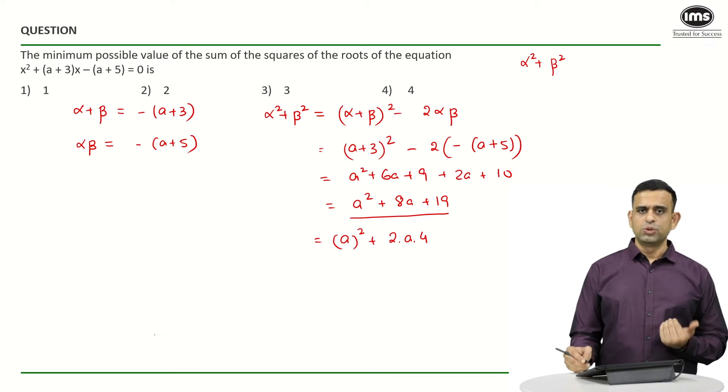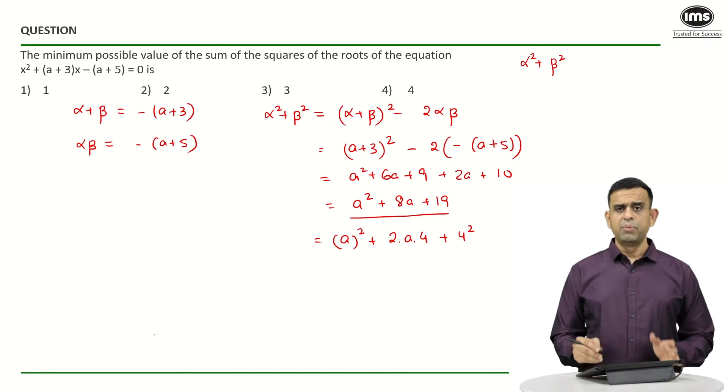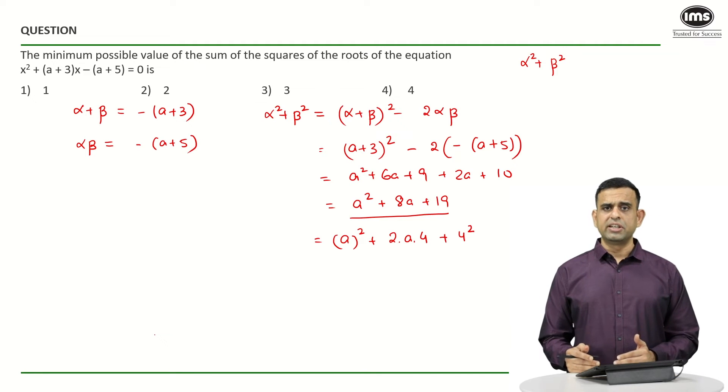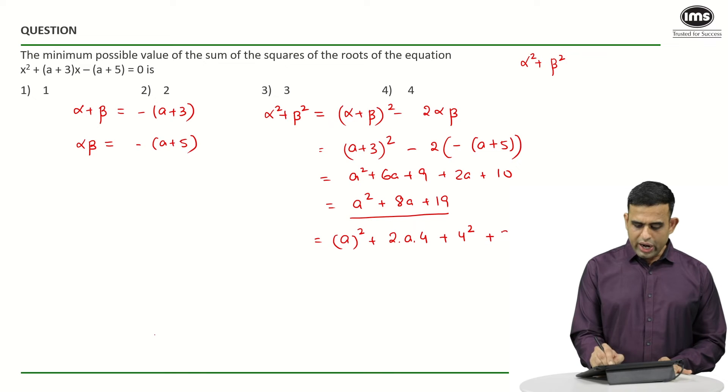You also need a term involving b², which in this case happens to be 4², but my constant term stands at 16 currently, but we want the number 19. So one needs to add a 3.